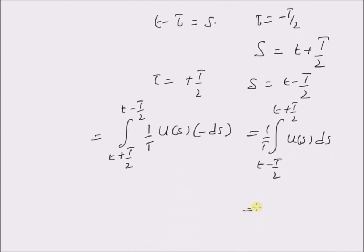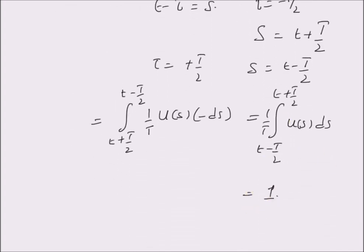So, this should be equal to 1. We should either know the system equation or the impulse response to compute the output of a system. Thanks for watching.